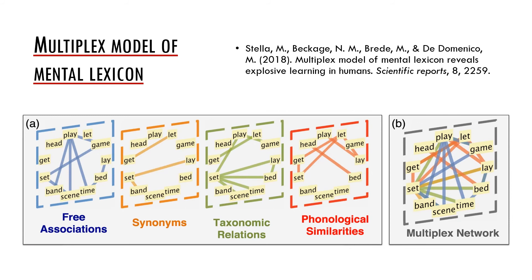The last model of mental lexicon I will briefly present here is a relatively new multiplex model devised by Massimo Stella and his colleagues. The authors think of the mental lexicon as a multiplex network, which means that there are multiple layers which encode multiple types of relations between words. On this slide four layers are presented: relations based on free associations, synonymical relations, taxonomic relations, and phonological similarities.